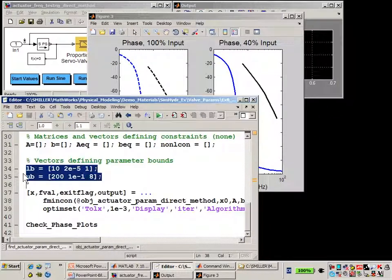Here you can see we've defined a lower bound and an upper bound for the three parameter values that we showed you before. Let's see how we've defined the objective function. The objective function is what fmincon is going to minimize.